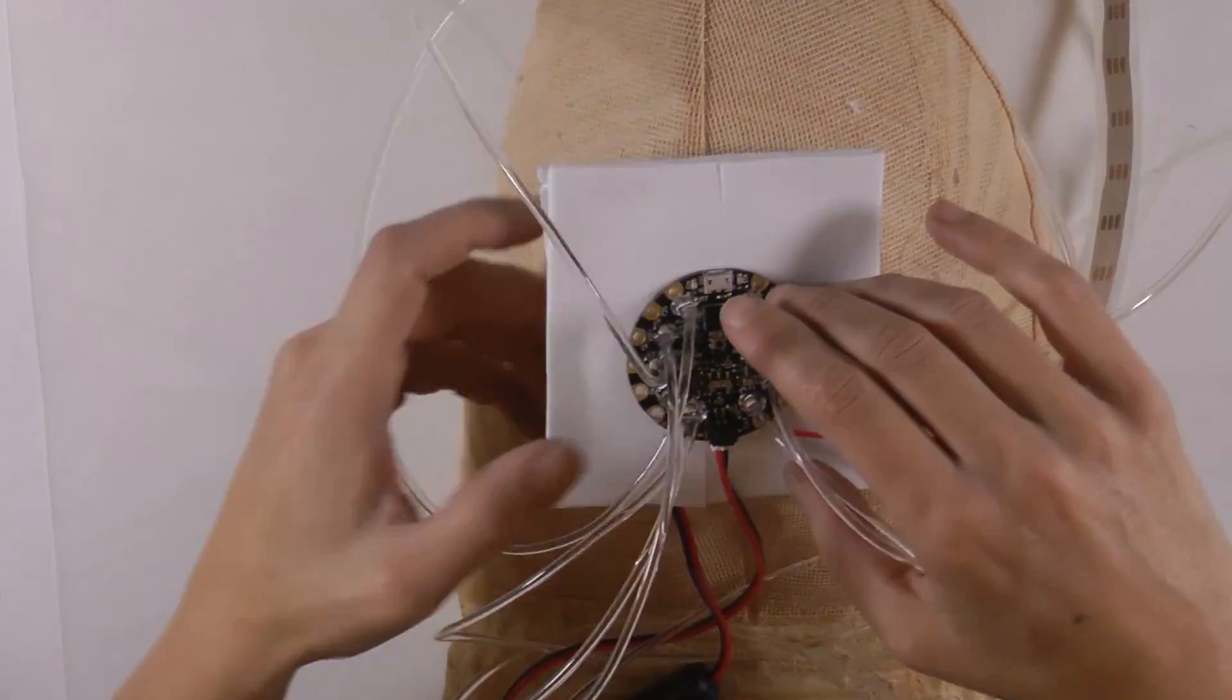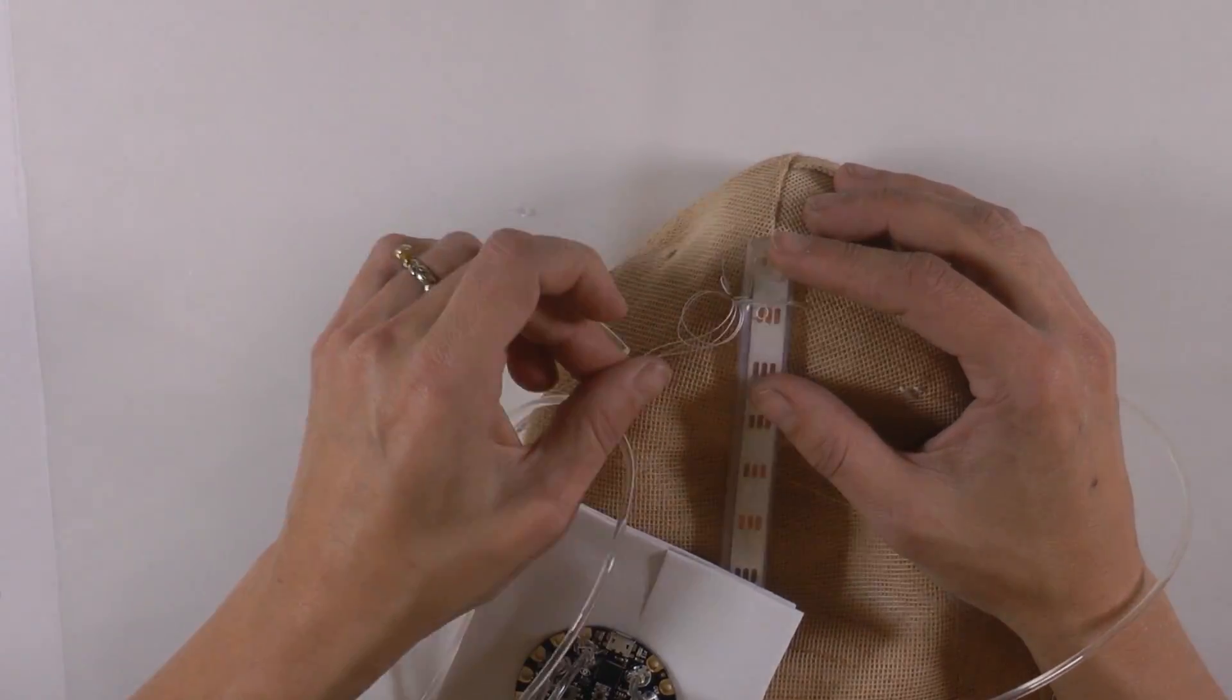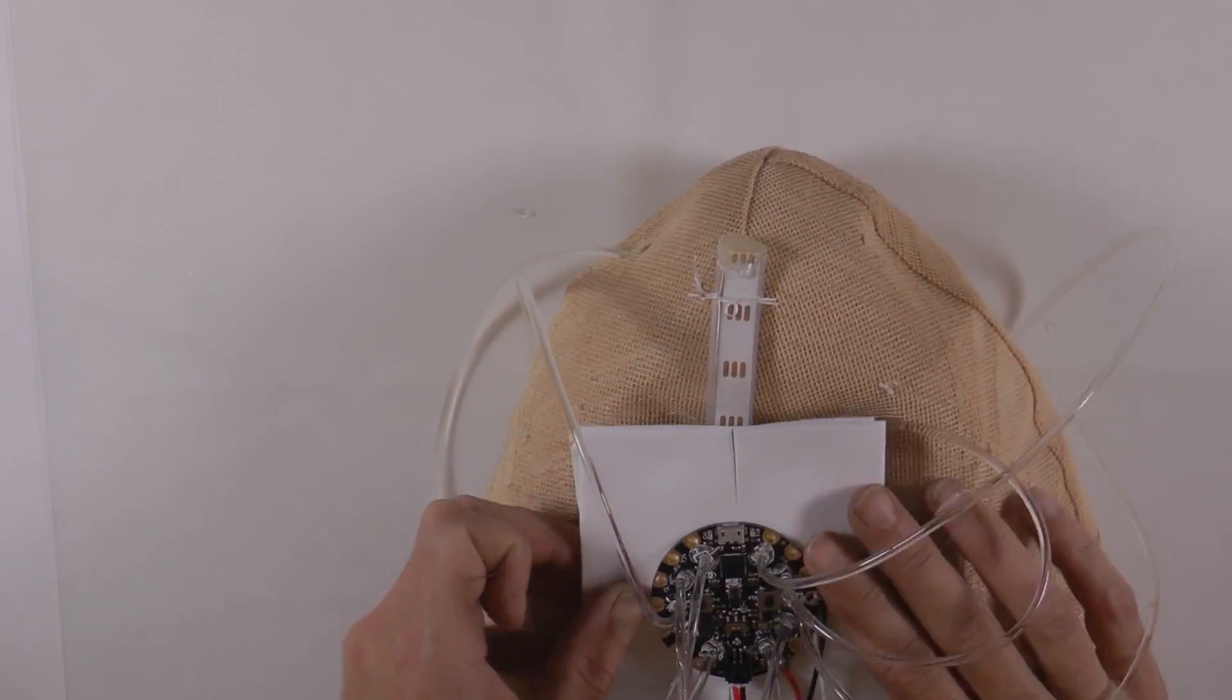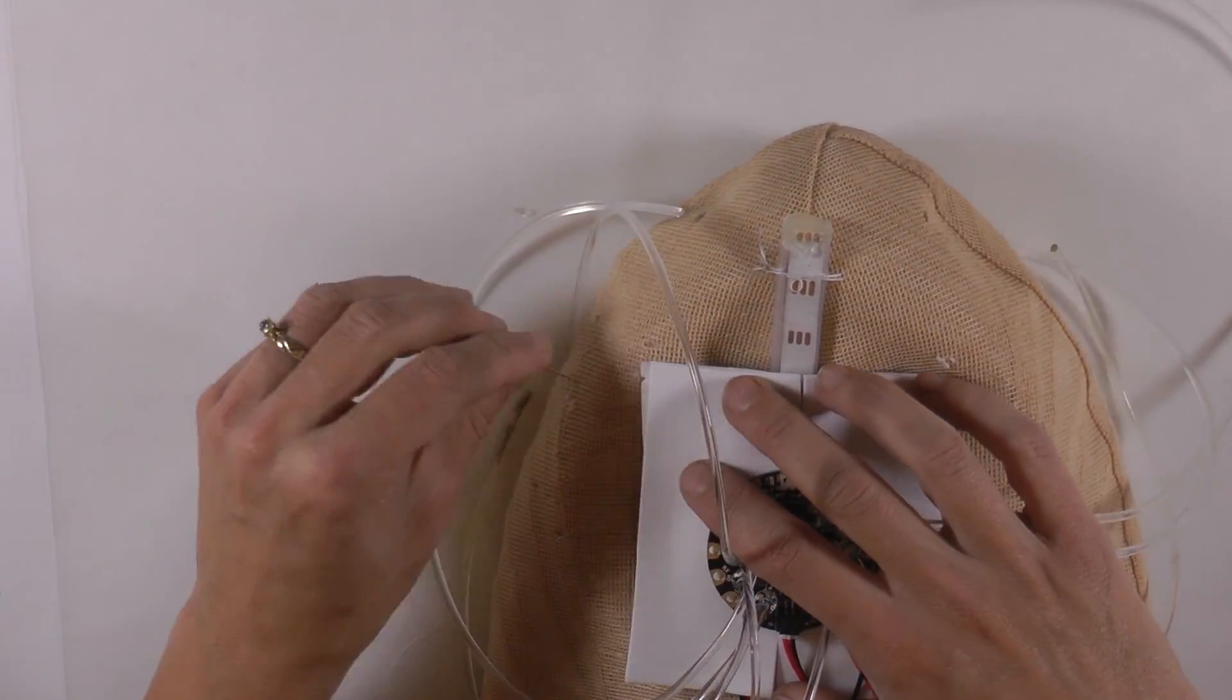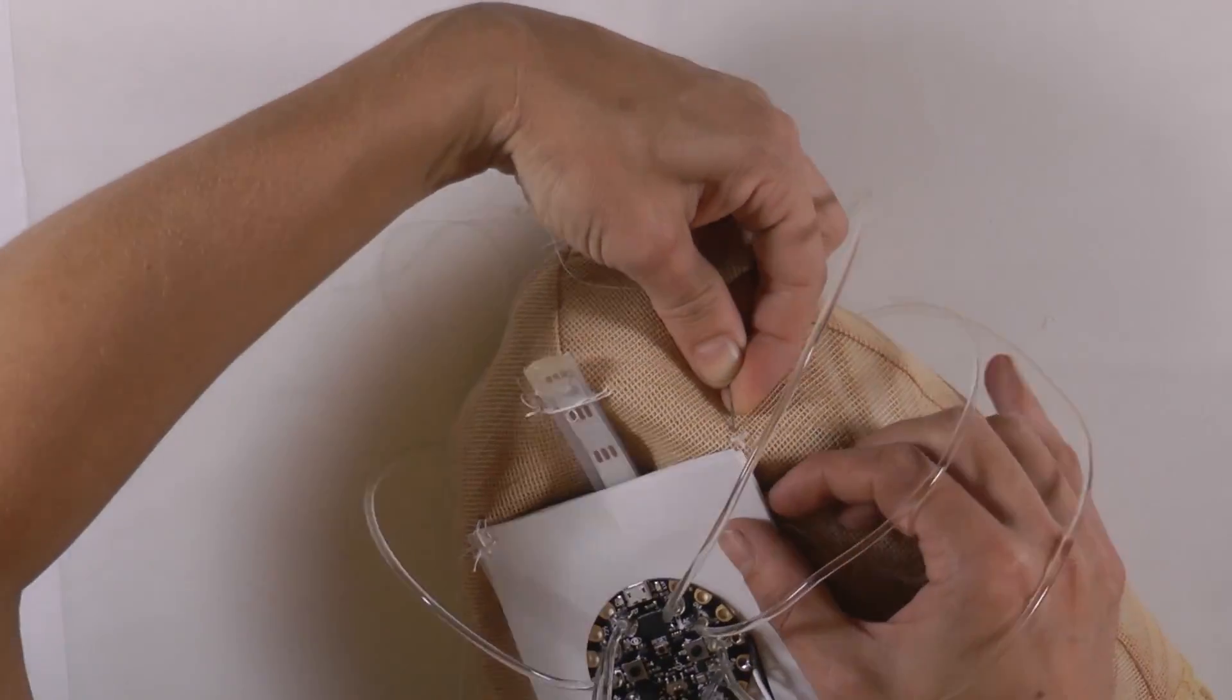Turn your wig inside out and secure the Neopixel strip face down on the front of the wig. Sew the craft foam over the light strip and sew the switch along the side seam.